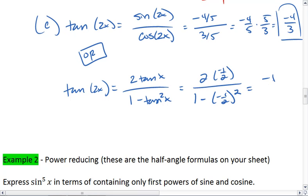We get negative 1 over 1 plus 1 fourth, or 1 minus 1 fourth. This gives us negative 1 all over 3 fourths, which is negative 1 times 4 thirds, which equals negative 4 thirds.